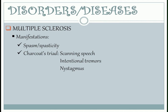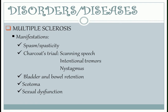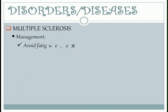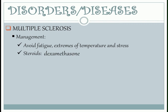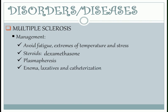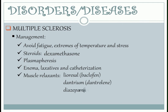You can use the word SIN to remember the Charcot's triad: scanning speech, intentional tremors, and nystagmus. Next is bladder and bowel retention, scotoma which is the blind spot, and sexual dysfunction. Management: avoid fatigue, extremes of temperature, and stress that could trigger exacerbation. Steroids like dexamethasone are used to decrease the autoimmune response. Plasmapheresis can also be done to eliminate antibodies from the patient's plasma. Enema, laxatives, and catheterization manage bladder and bowel retention. Muscle relaxants like Lioresal, Dantrium, or Diazepam are prescribed to lessen pain and spasm.